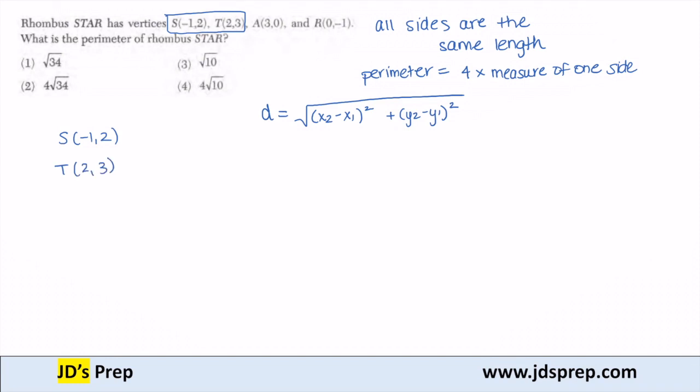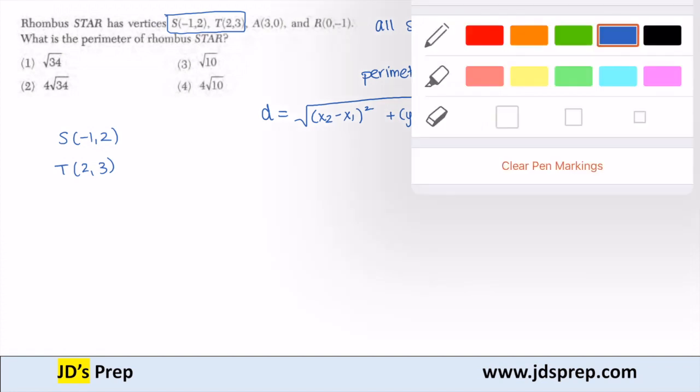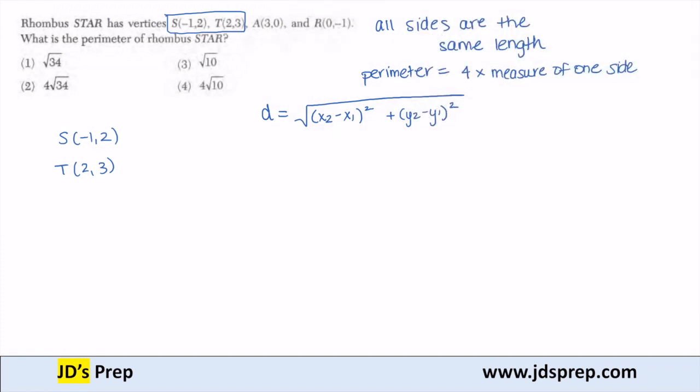We're just going to plug these into our distance formula. Let's label them: x₁ is -1, y₁ is 2, x₂ is 2, and y₂ is 3. Now let's plug them into our distance formula. So x₂ is 2 minus x₁, which is -1, squared. y₂ is 3 minus y₁, which is 2, and that's going to be squared.